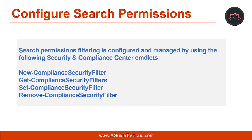How do you configure search permissions? Filtered search permissions can be configured to allow an eDiscovery manager to search only a subset of mailboxes and sites in a Microsoft 365 organization. Search permissions filtering is configured by creating a filter that uses a supported recipient filter to limit which mailboxes can be searched. You can also create filters to specify what mailbox or site content can be searched. To run the compliance security filter commandlets, you must be a member of the organization management role group in your Office 365 security and compliance center, and connect Windows PowerShell to both the security and compliance center and to your Exchange Online organization.